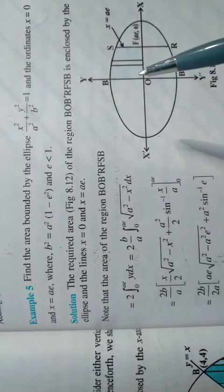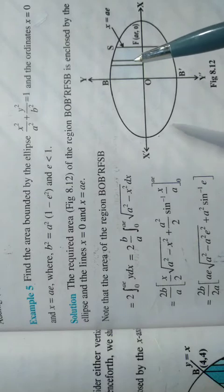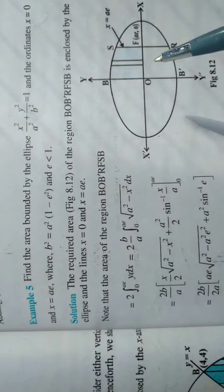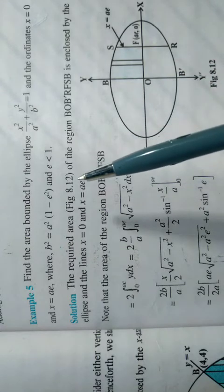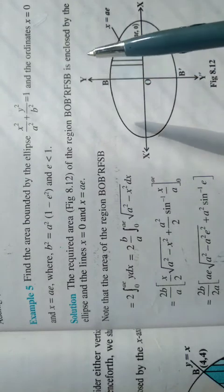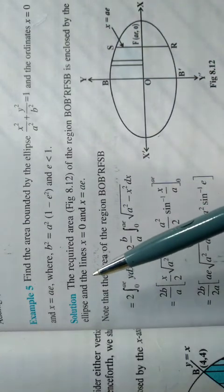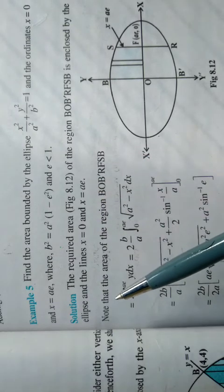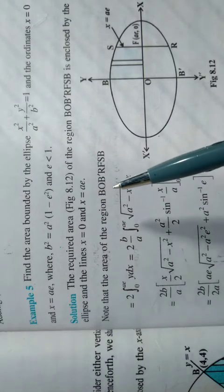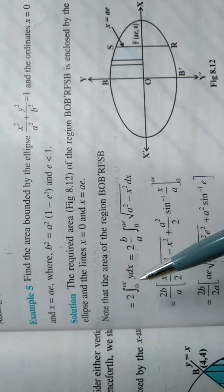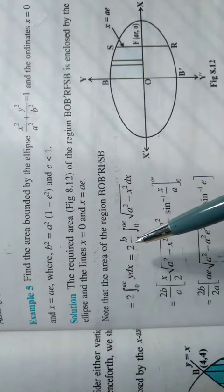The figure is symmetrical about the axis. The required area of the region C enclosed by ellipse where x is equal to 0 and x is equal to E. Note that the area of the region C is equal to twice the integral from 0 to ae of y dx.